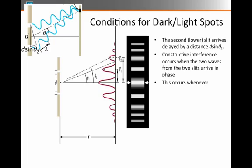We have constructive interference whenever the two waves are exactly a multiple of a wavelength out of phase. So that's when we write down d sin θ₂ = mλ. That's the condition for constructive interference.